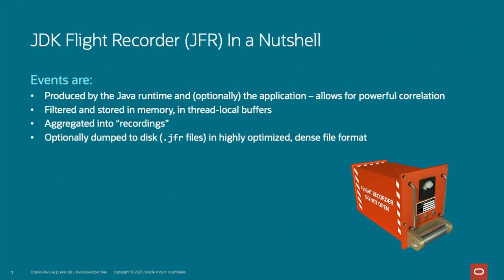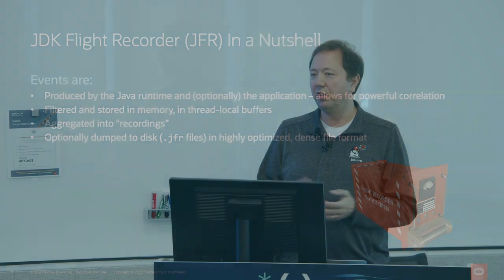The events are produced either by the Java runtime itself, or you can also produce your own events for your application. The events can be filtered and stored either in memory or written to disk to analyze later. We aggregate these events into what we call recordings, and when dumped to disk we normally use the file extension .jfr. The on-disk file format is very highly optimized and dense — you can represent a lot of valuable information in a very small file. This is all very theoretical, so I'm going to give you a quick demo of what this looks like.